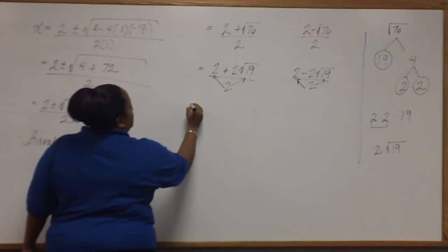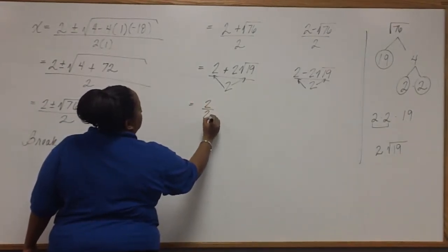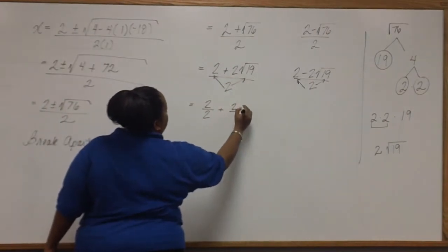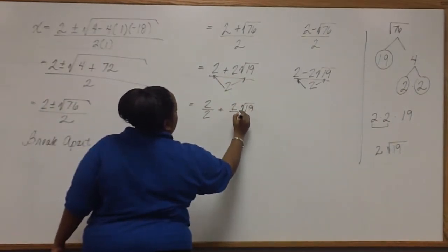Which means that we have 2 over 2 plus, here, we can write 2 square root of 19 over 2.